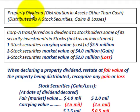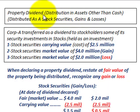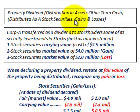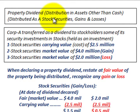What we're going to be looking at here are property dividends. Those are distributions of assets other than cash to the shareholders of the company. We're going to specifically look at distributing some stock securities, and we're going to be looking at both gains and losses on these stock securities that are being distributed as dividends to the shareholders.